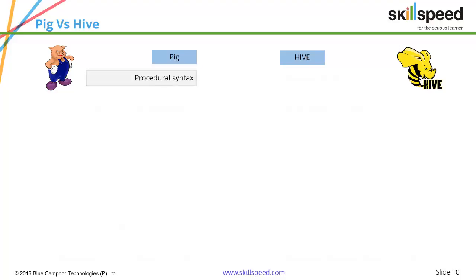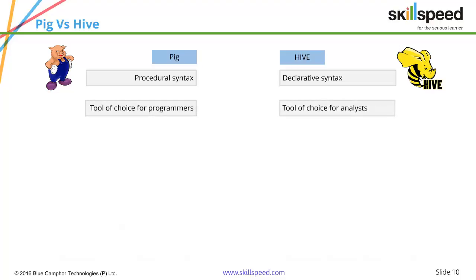Let's do a quick comparison of Hive and Pig. In Pig, you have procedural syntax, while Hive has declarative syntax. In Pig, you write in a scripting language creating relations in a stored-procedure style, whereas in Hive you have declarative syntax much like SQL. Pig is the tool of choice for programmers, while Hive is mostly loved by analyst folks. In Pig, partitioning is not supported, whereas in Hive you can have partitions.